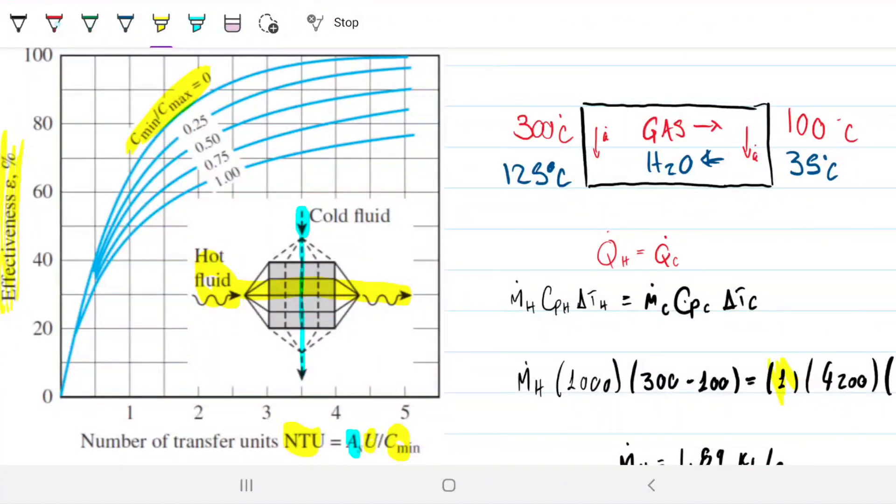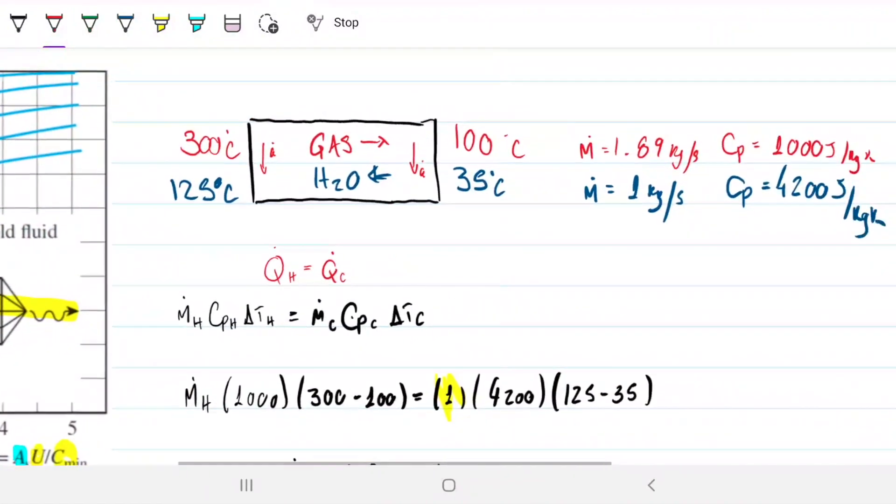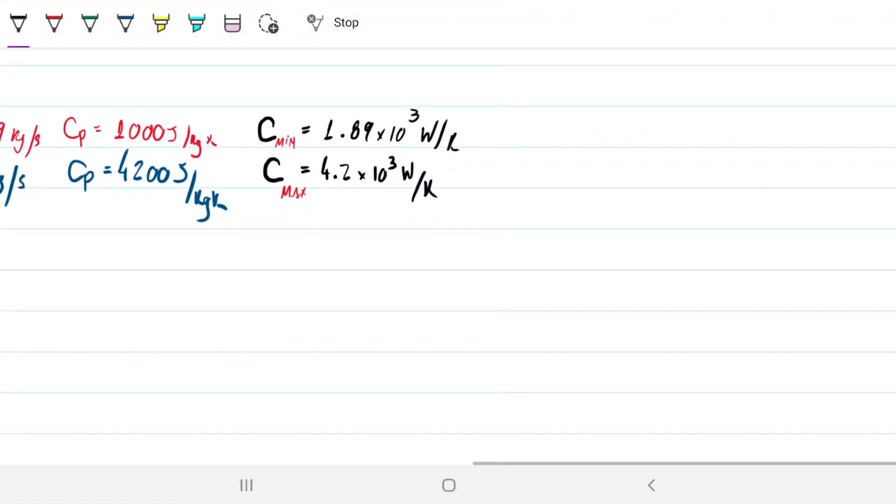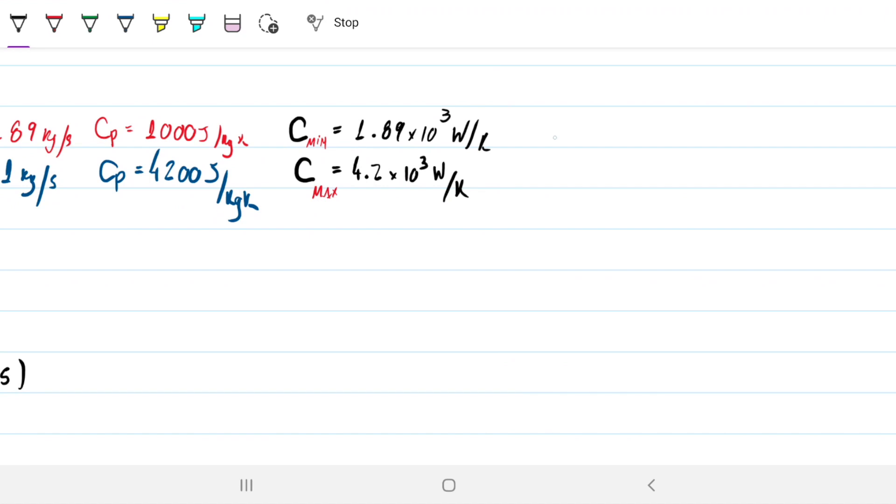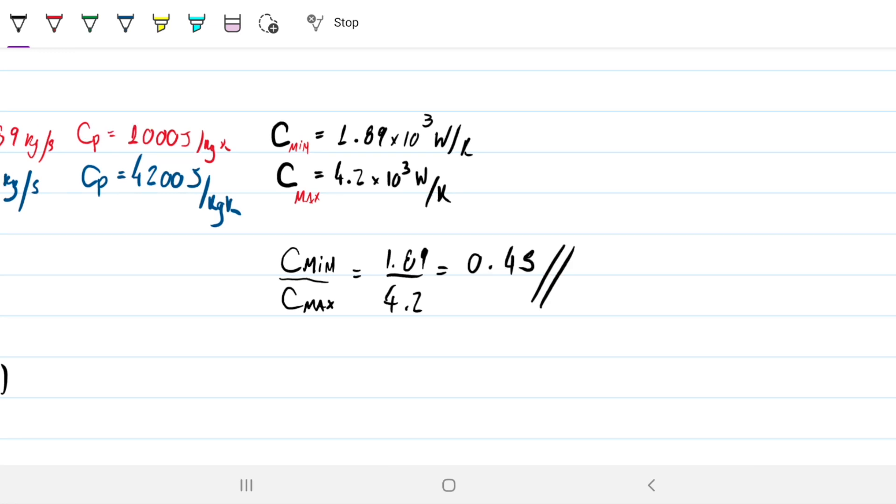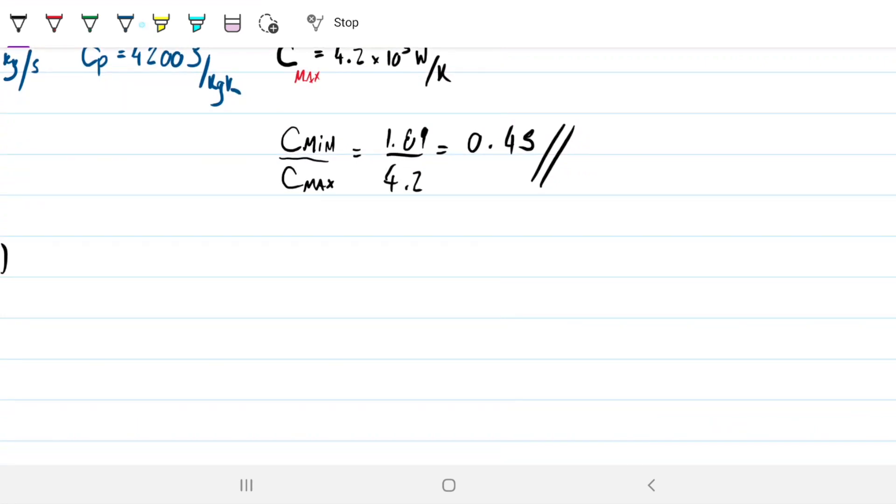This is straightforward for us to grab. We have both of them, just divide them up, find the ratio. The effectiveness is what we're missing next. So let's just start by doing the ratio between these two fellows. So that will be C min divided by C max, which is just 1.89 divided by 4.2. There is no unit. Units are the same, so this is 0.45. So that's one of the things we need to find the NTU.